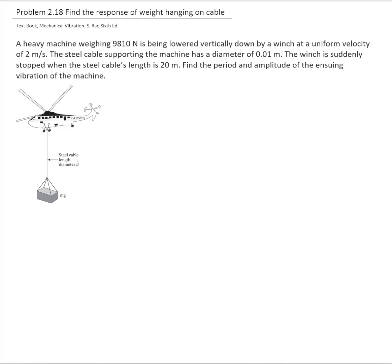The steel cable supporting the machine has a diameter of 0.01 m. The winch is suddenly stopped when the steel cable length is 20 m. We want to find the period and the amplitude of the ensuing vibration of the machine.